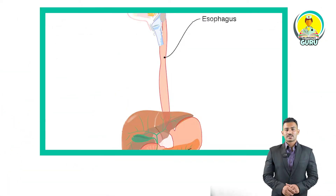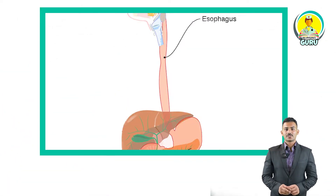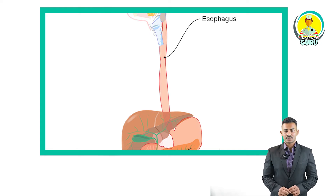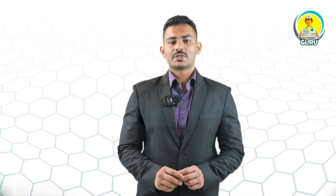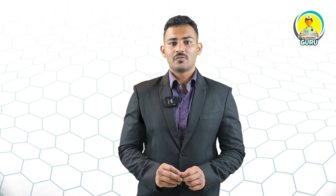This food then travels down to the oesophagus. The oesophagus is a tube connecting the mouth to the stomach, running through the thoracic cavity. Food travels down the oesophagus through a series of involuntary rhythmic contractions called peristalsis, which are wave-like movements.